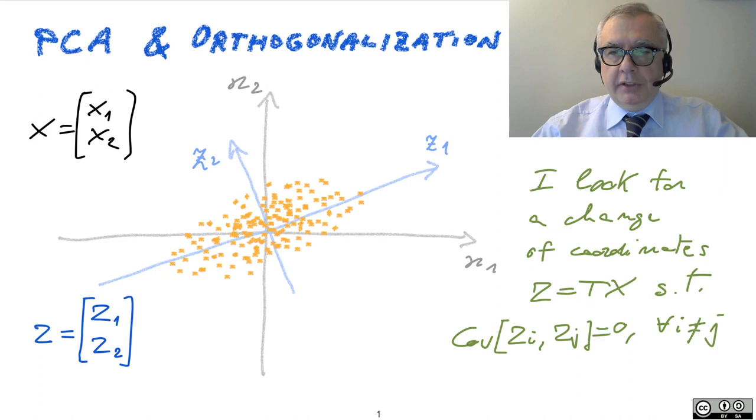I just illustrate this in this figure where we have a random vector given by two joint random variables that we call X1 and X2. I represent my data as a scatter plot. Here you can see the scatter plot.